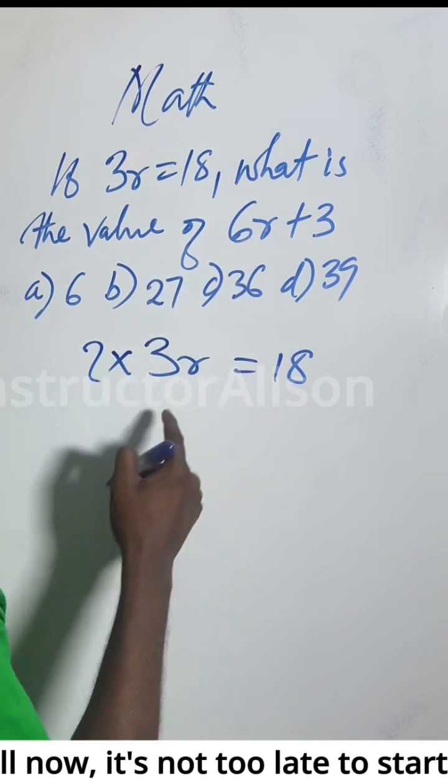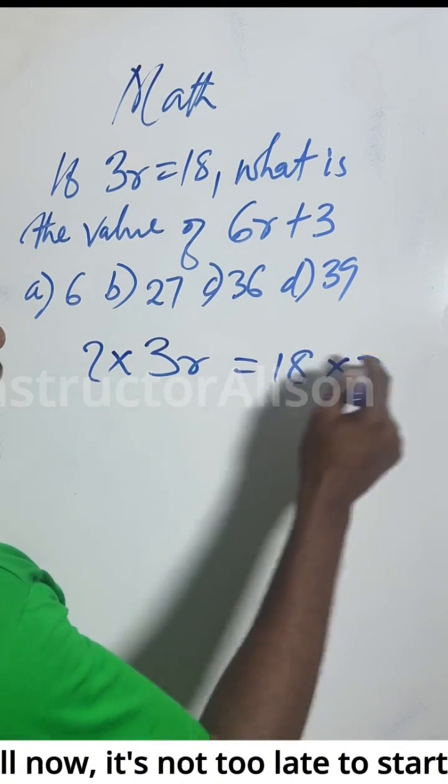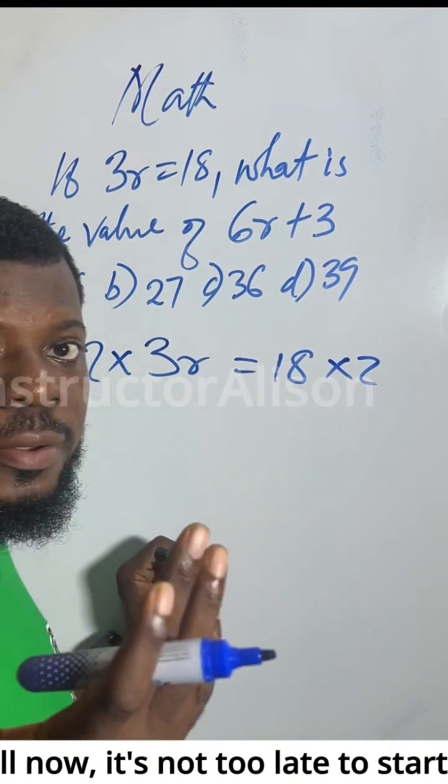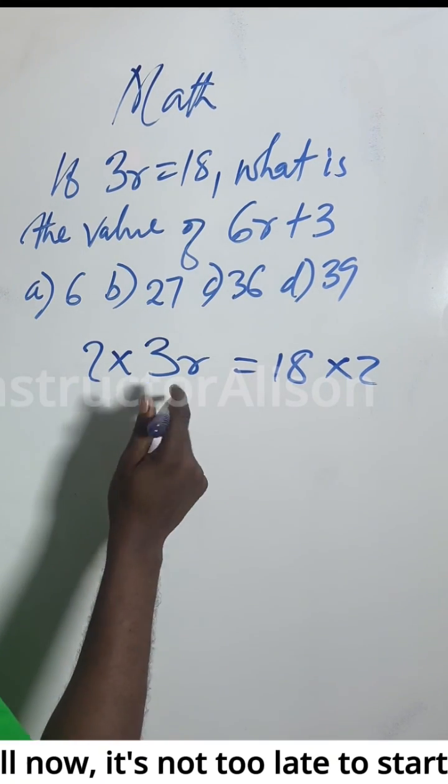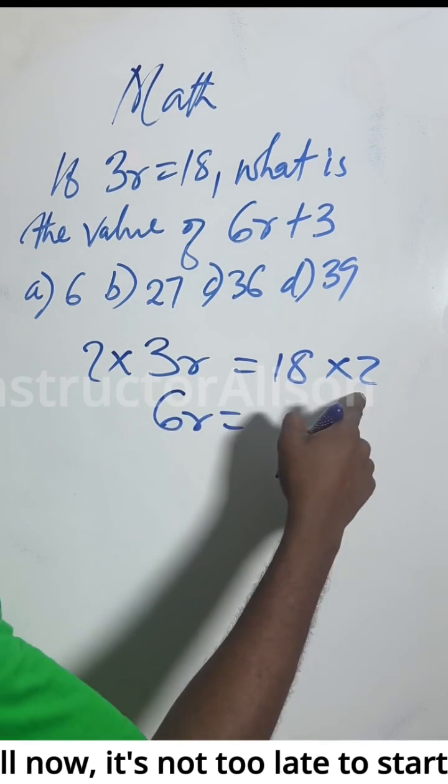If you multiply 2 by this one, anything you do for left you do for right. So 2 times 3x equals 18 times 2, which gives us 6x equals 36.